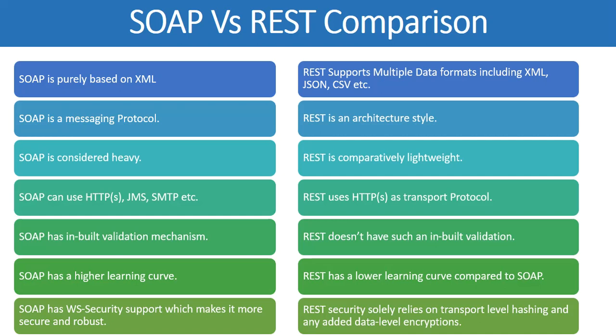In general, with SOAP web services you get more security options at both the transport level and via WS-Security features. For example, with REST, if you pass request parameters as GET URI parameters, sensitive information appears in the URL, and unless SSL is implemented at the transport level, this can be a security issue.